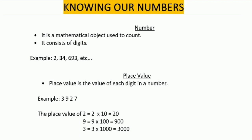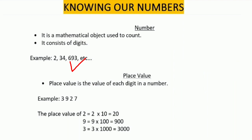Let us start our discussion. Before going to our topic, first tell me what do you mean by a number. A number is a mathematical object which is used to count, or a number consists of some digits. For example, 34 is a number which consists of two digits, that is 3 and 4. While 693 is a number which consists of three digits, that is 6, 9, and 3.